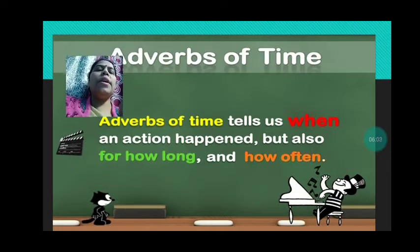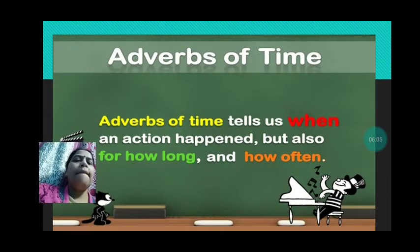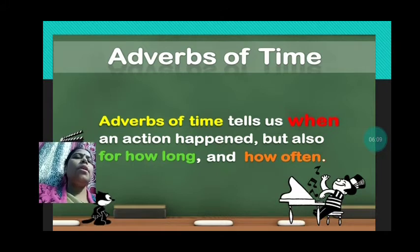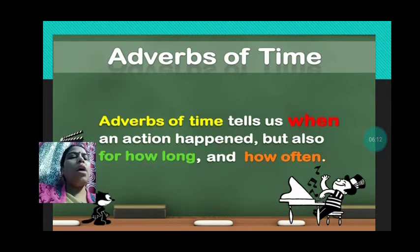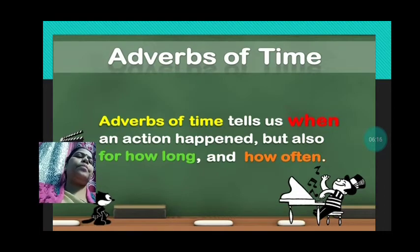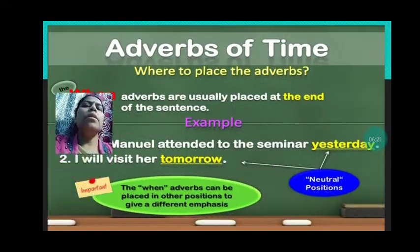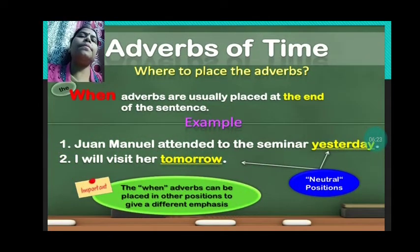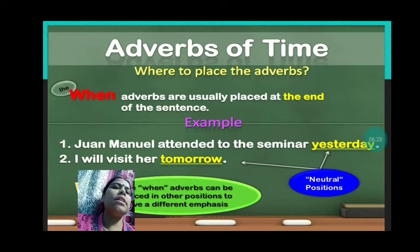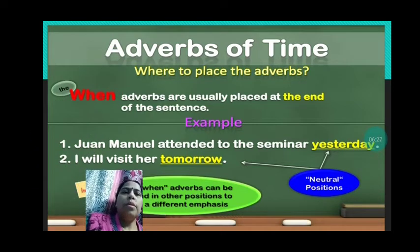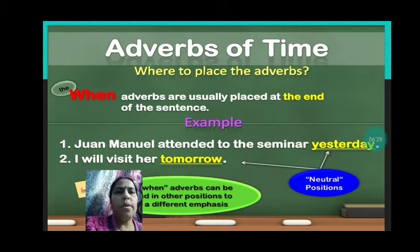Now children, we will read about adverbs of time. Adverbs of time tell us when an action happened, and also for how long and how often the action takes place. So the word that tells you when the action happens — that is adverb of time. Now, where to place the adverbs?